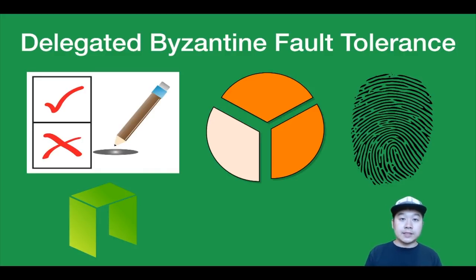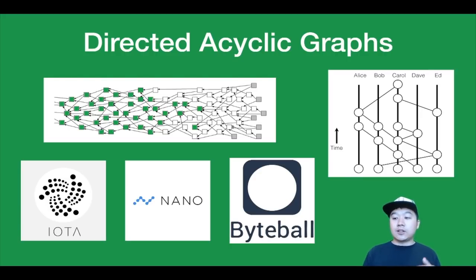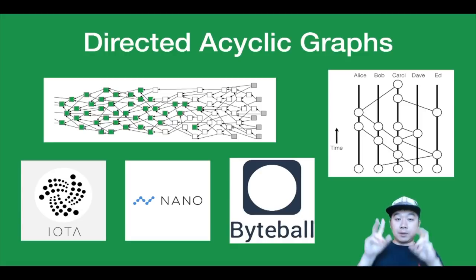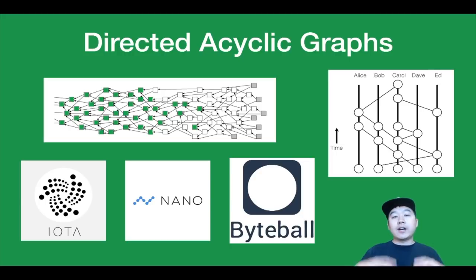And finally, Directed Acyclic Graphs — not super similar to these other blockchain-related consensus mechanisms, but they do have their own consensus mechanisms. These are highly scalable, efficient, and fast. They're a different approach to blockchain because they work to add blocks or transactions in parallel instead of one by one as in a blockchain. On a high level, each new block confirms some previous transactions, so everyone is working together to maintain the ledger.